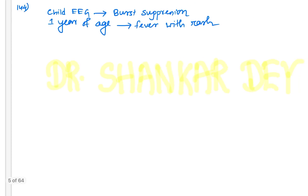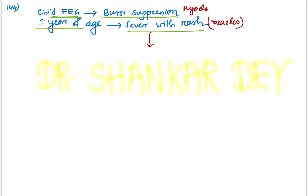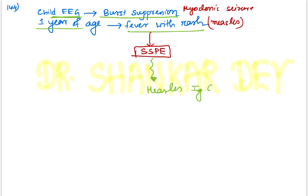Question 144: A child with EEG showing burst suppression and history of fever with rash at one year of age. This is likely a history of measles, following which the child developed myoclonic seizures and EEG showing burst suppression. This is typical of SSPE — Subacute Sclerosing Panencephalitis. For investigation, national level faculties say the answer is measles IgG.